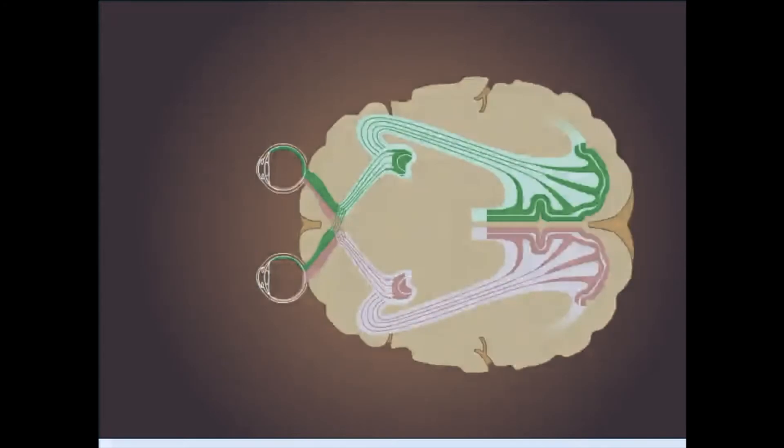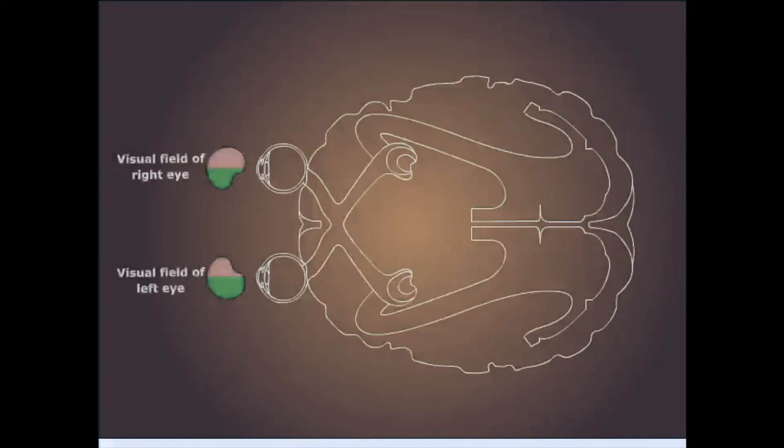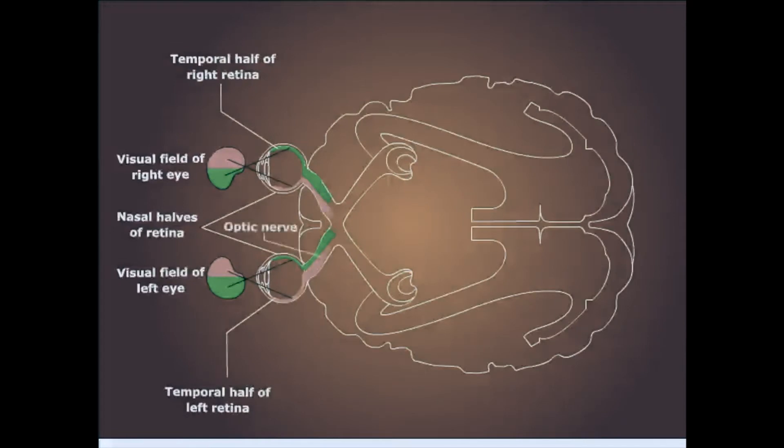We will now look at the visual pathway in greater detail. Nasal halves of the retina receive information from the temporal visual fields, and each temporal retina receives information from the nasal visual field. At the optic chiasm, the fibers from the nasal halves of each retina decusate. The optic fibers from the temporal halves of each retina pass through the chiasm without decusating. This anatomic arrangement allows each hemisphere to receive visual information from the contralateral visual field.